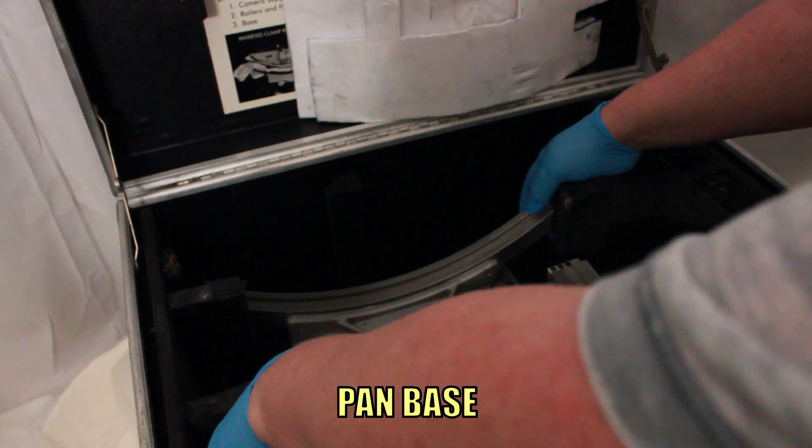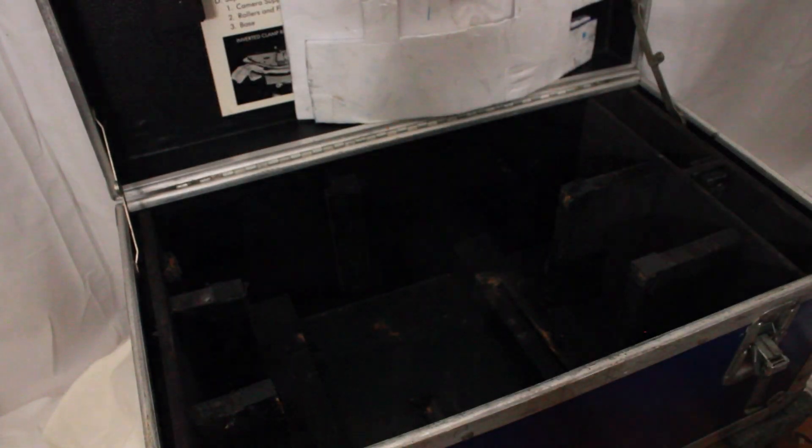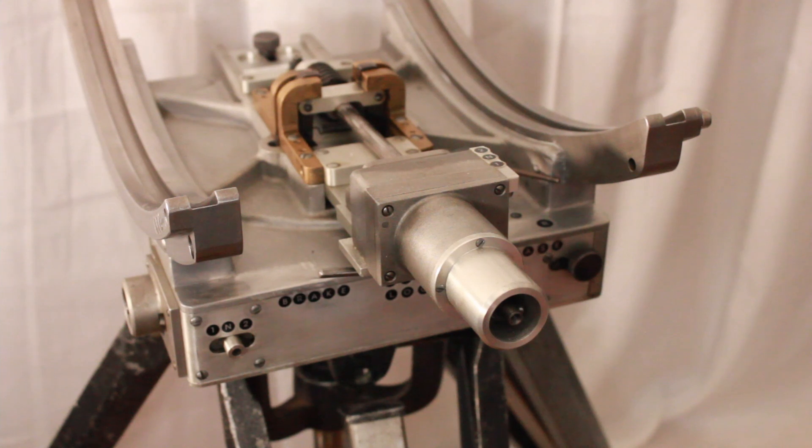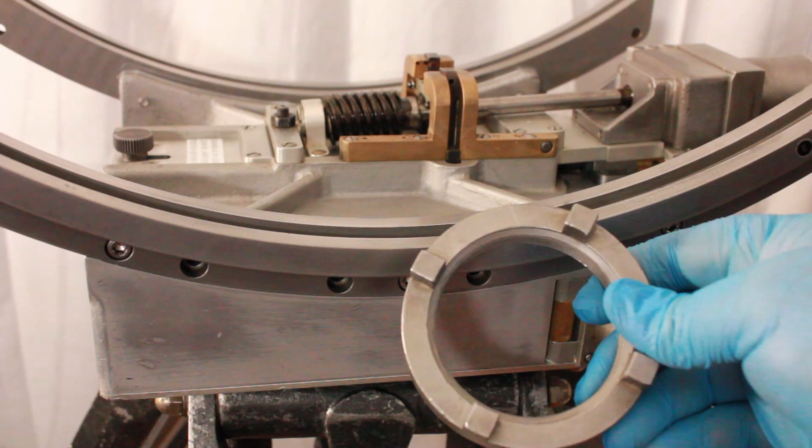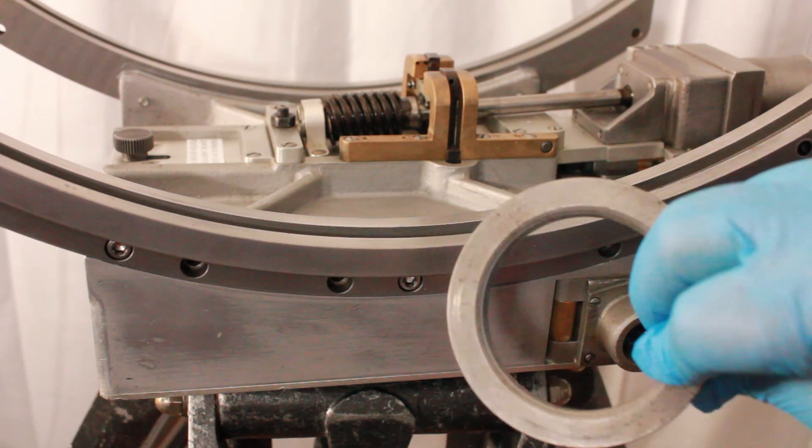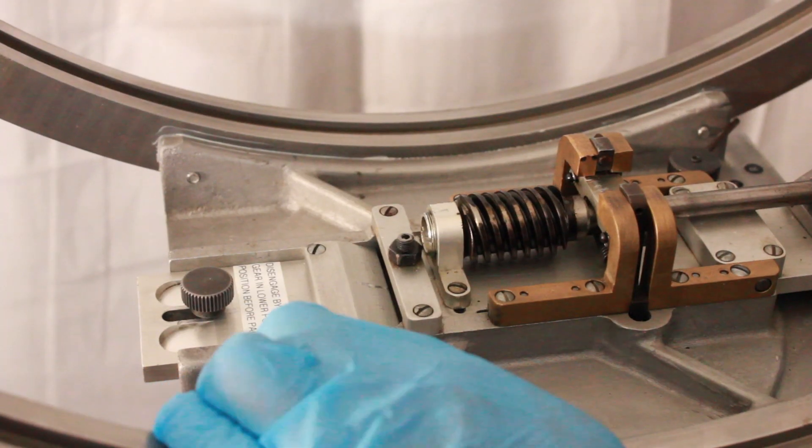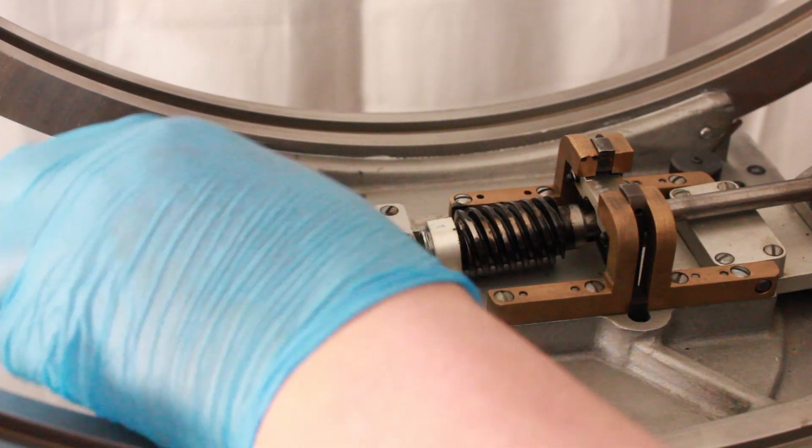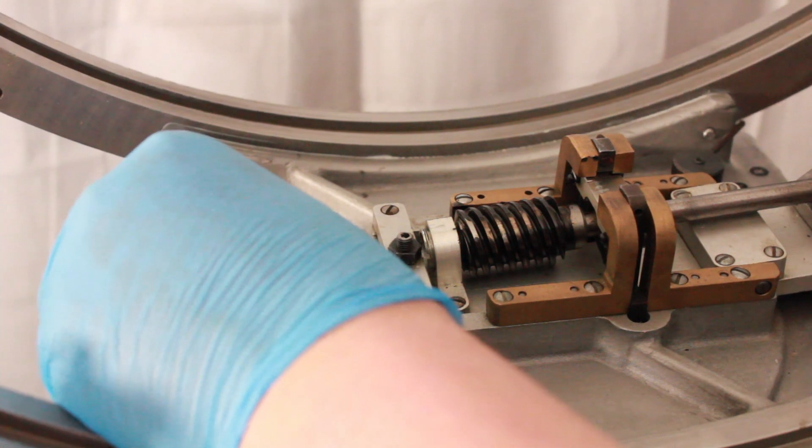Remove pan base and mount onto a Mitchell Mount Tripod. Secure with the castle nut provided. Engage the small gear by pushing the plate in and tightening the knob.